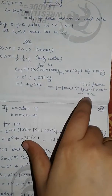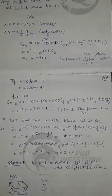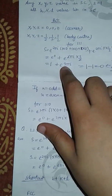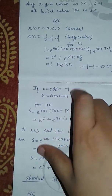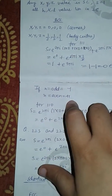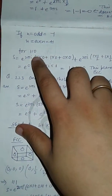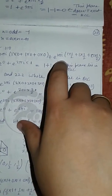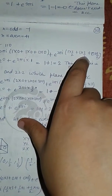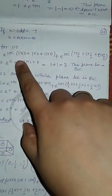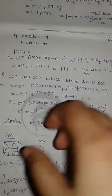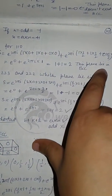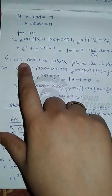So 1 plus (−1) equals 0, meaning this plane doesn't exist in BCC. The rule is: if n is odd, the value of e to the power n·pi·i is minus 1, and if n is even, it is plus 1. For plane (1,1,0): S equals e to the power 2 pi i (1·0 + 1·0 + 0·0) plus e to the power 2 pi i (1·1/2 + 1·1/2 + 0·1/2), which gives 1 plus e to the power 2 pi i into 1, so 1 plus 1 equals 2. This plane lies in BCC.